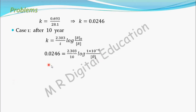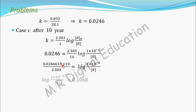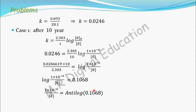Now simplify: rearranging gives 0.0246 × 10 divided by 2.303, which equals 0.1068. Taking this log term to the other side as an antilog, we get 1×10⁻⁶ divided by R equals antilog of 0.1068, which is 1.2787.